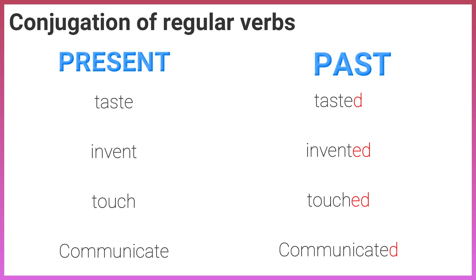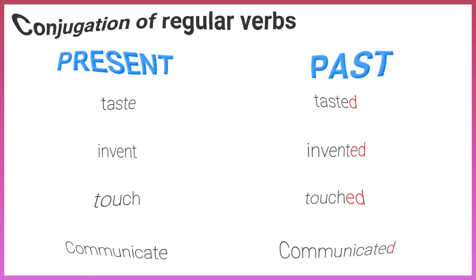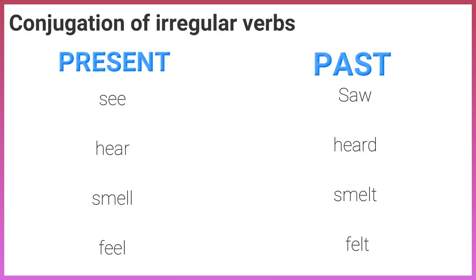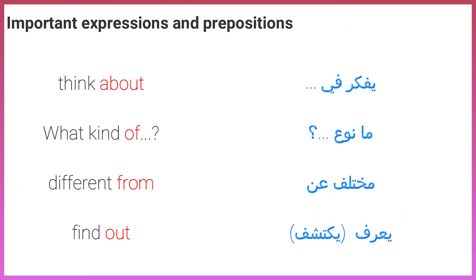Conjugation of verbs. Regular verbs — present and past: Taste, Tasted. Invent, Invented. Touch, Touched. Communicate, Communicated. Irregular verbs: See, Saw. Hear, Heard. Smell, Smelt. Feel, Felt.